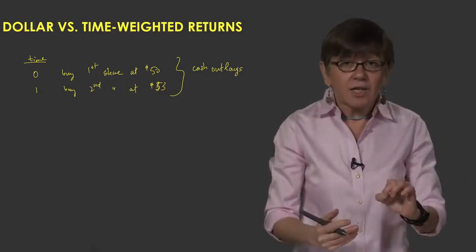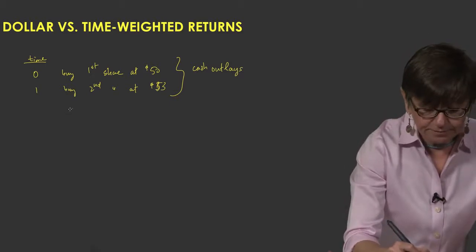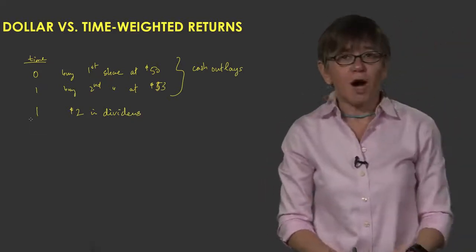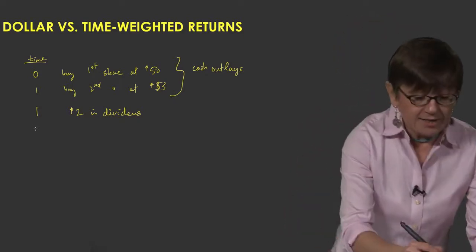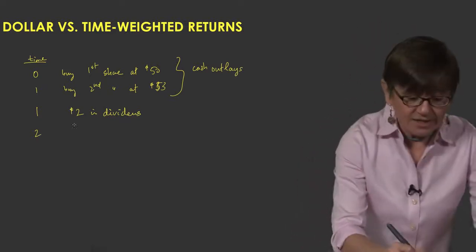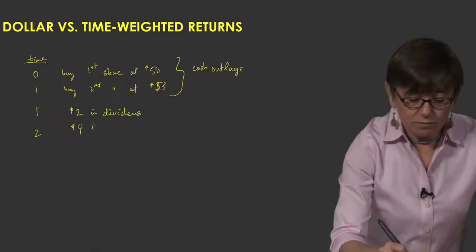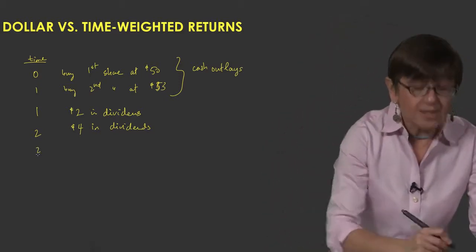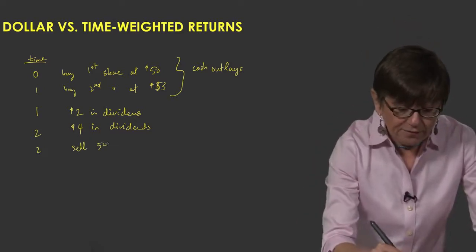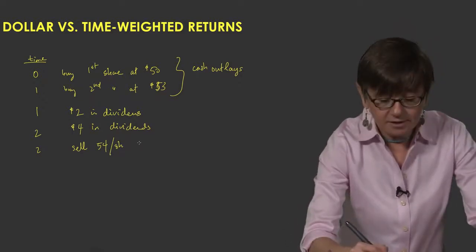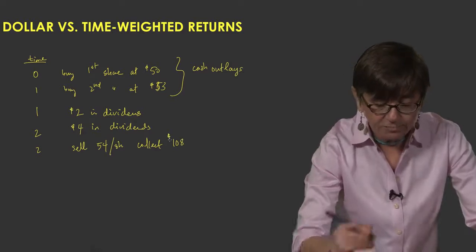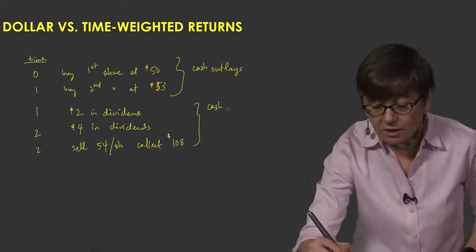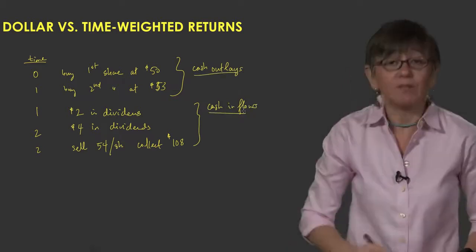In addition, you collect $2 in dividends at t equals one from the first share that you bought. And then at t equals 2 you get $4 in dividends because now you have two shares. And let's say that at the end of the second year you also sell your shares at $54 per share, so you collect a total of $108. These are your cash inflows.